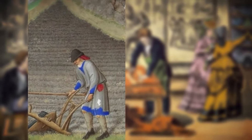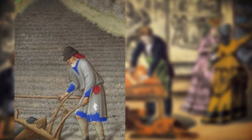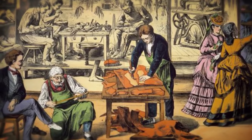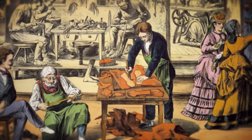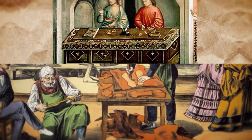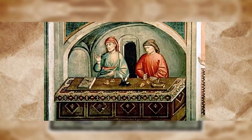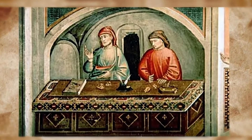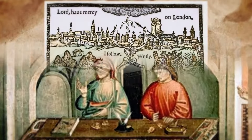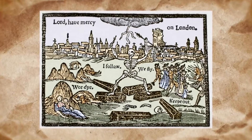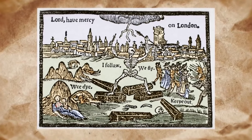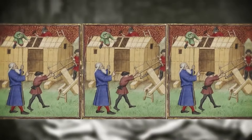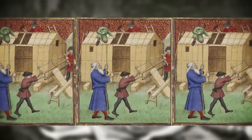The Black Plague spread across several countries in Europe, but it hit some areas harder than others. Italy, France, and England were among the hardest hit countries. Italy, with its busy ports and trade routes, saw the disease arrive early and spread rapidly. In England, records suggest that over a third of the population perished due to the plague.